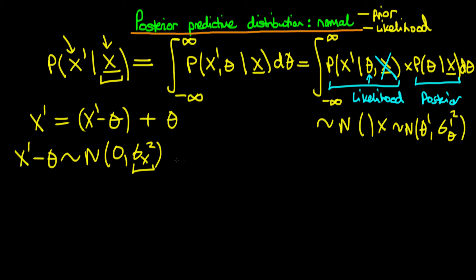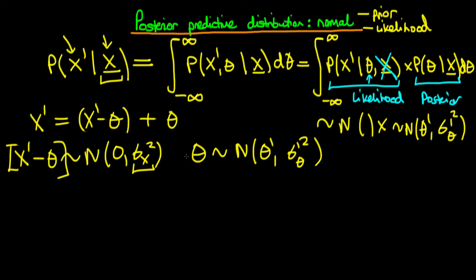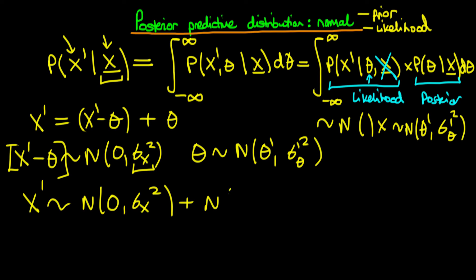If we just think about theta, we know that theta here is just the posterior density, so it's normally distributed with a mean of theta-primed and a variance of sigma-squared-theta-primed. These two random variables — x-primed minus theta, and theta — are themselves straightforward normal distributions, and they're independent. Hence, because the sum of two normal distributions is itself normal, we have a normal with mean zero and variance sigma-squared-x, plus a normal with mean theta-primed and variance sigma-squared-theta-primed, and their sum is itself a normal distribution.